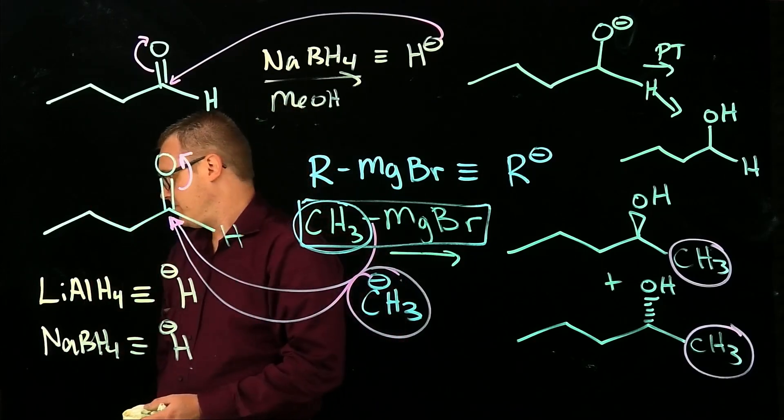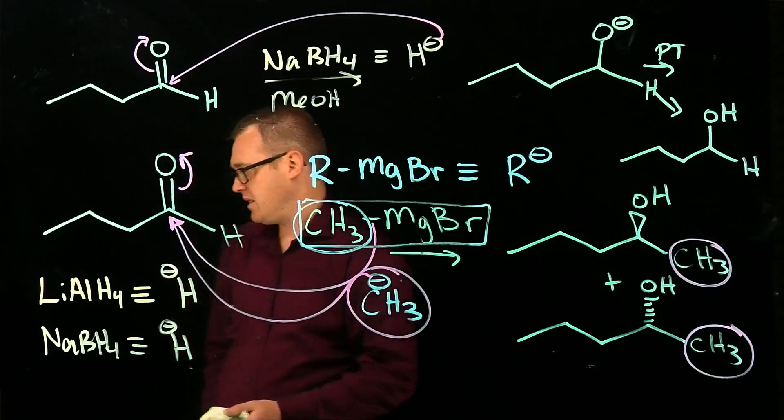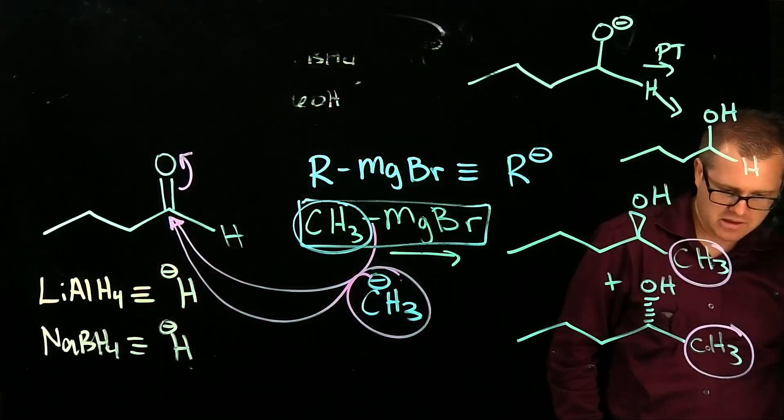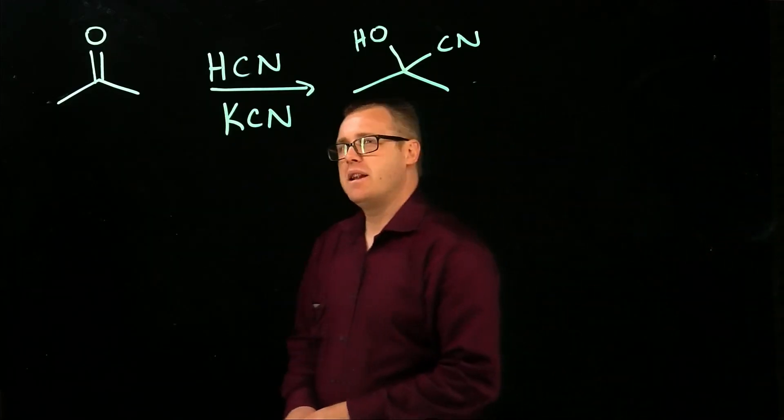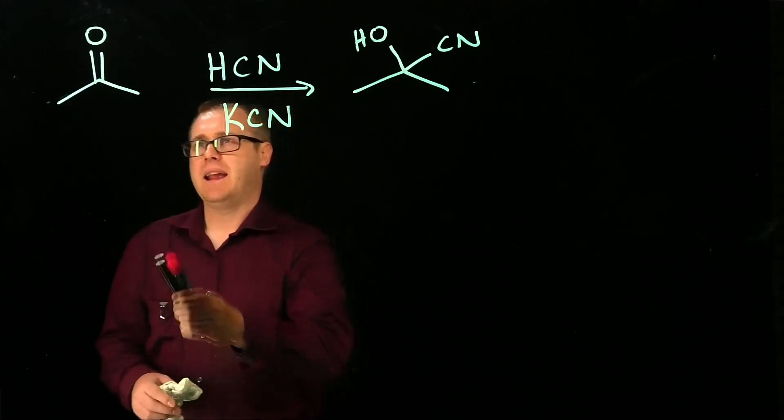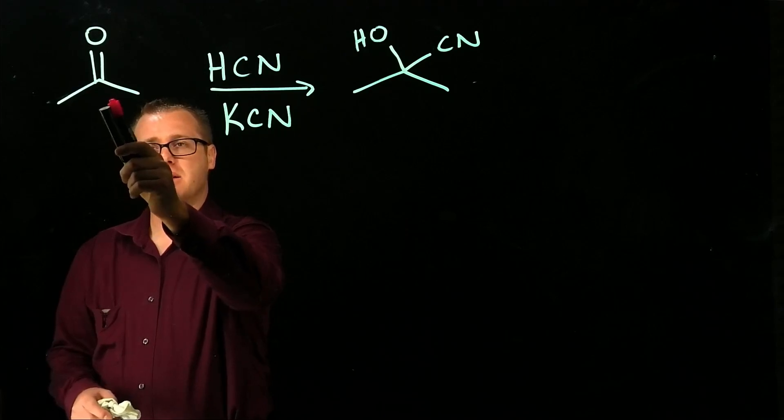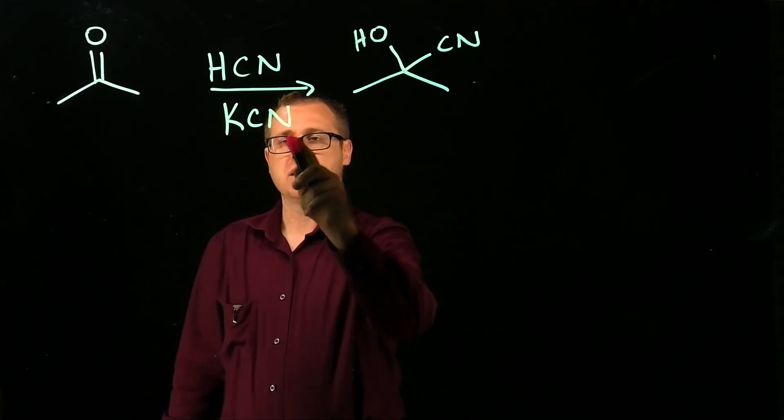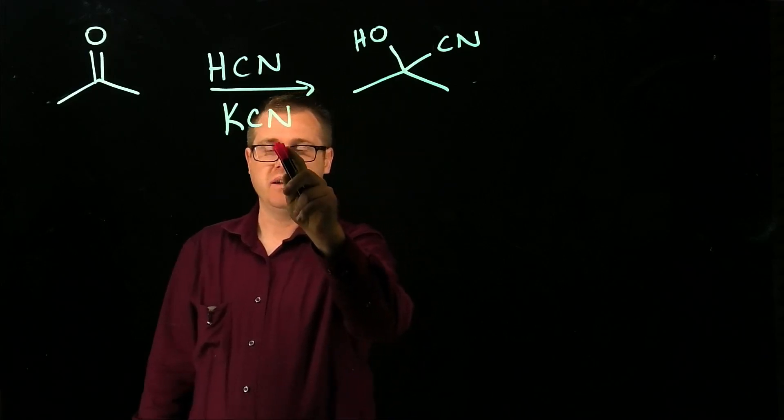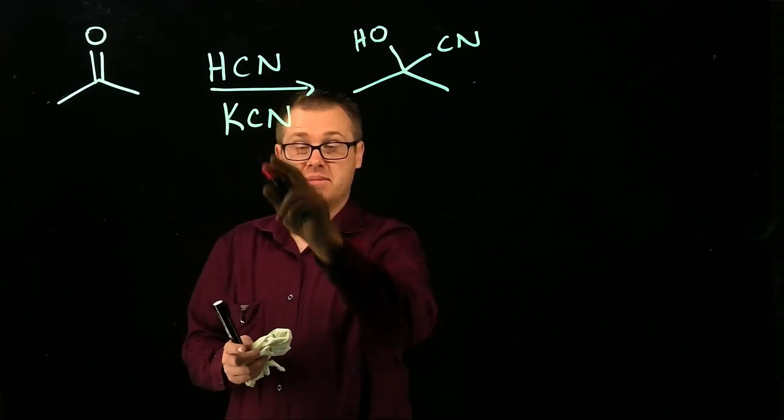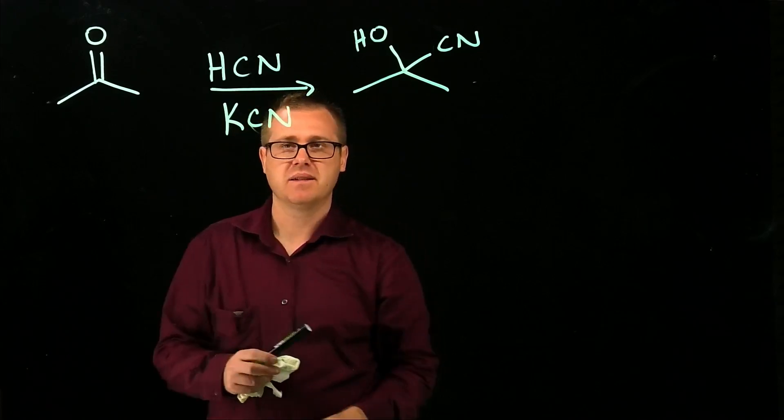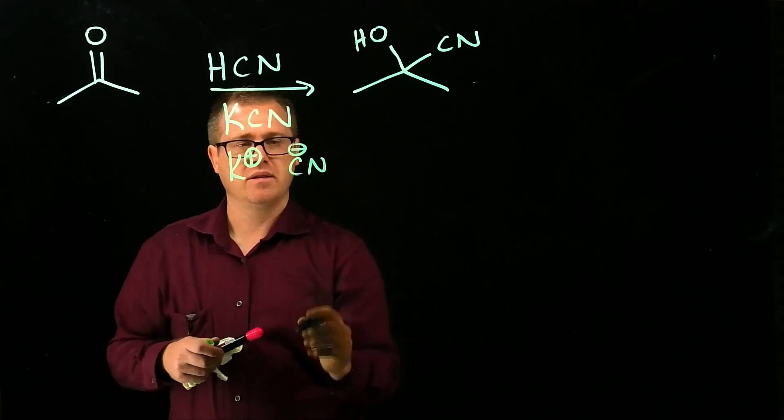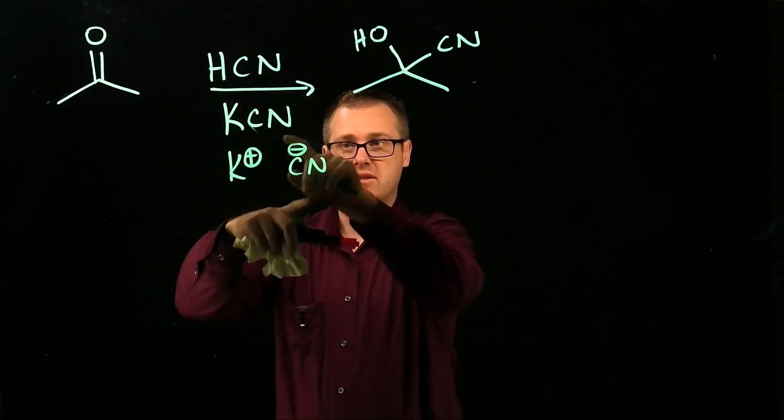The next reaction that we want to talk about is when we use cyanic acid. So in our next reaction, we can take a ketone or an aldehyde and treat it with hydrogen cyanide with a small amount of base, your potassium cyanide. And we see how this is an ionic species. There's our metal, there's our anion species. So that's going to translate into this.